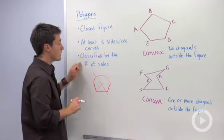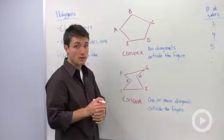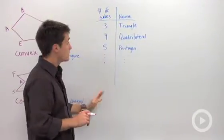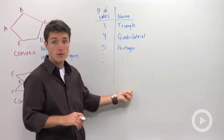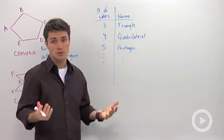And the third thing is that they're classified by the number of sides. So what you're going to need to do is memorize a table that's probably found in your textbook that lists the number of sides and the name for that polygon. This is something that you're going to have to memorize, because you're going to see it on tests and quizzes throughout geometry.